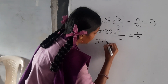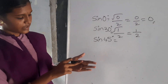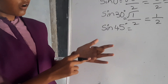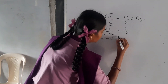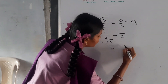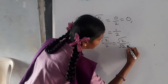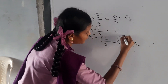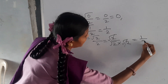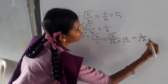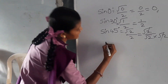Let us find the value of sin 45. We have assumed that the middle finger has 45 degrees. The number of fingers below are 1, 2. So root of 2 by 2. Root 2 is also written as root 2 into root 2; root 2 and root 2 are cancelled. So sin 45 is equals to 1 by root 2.